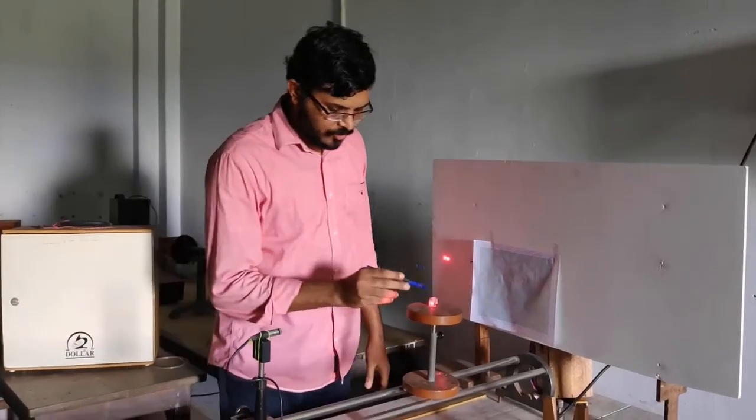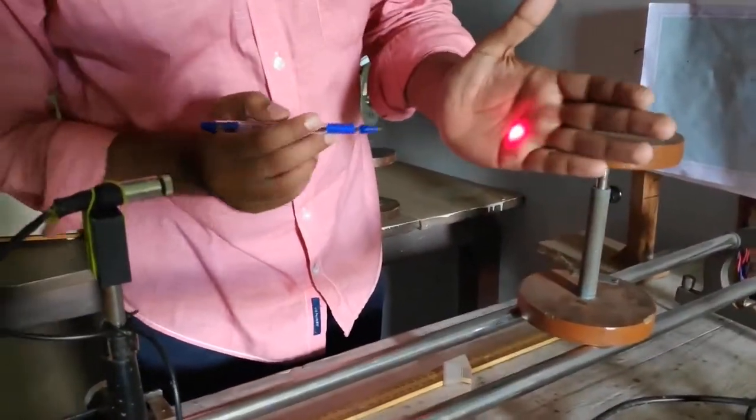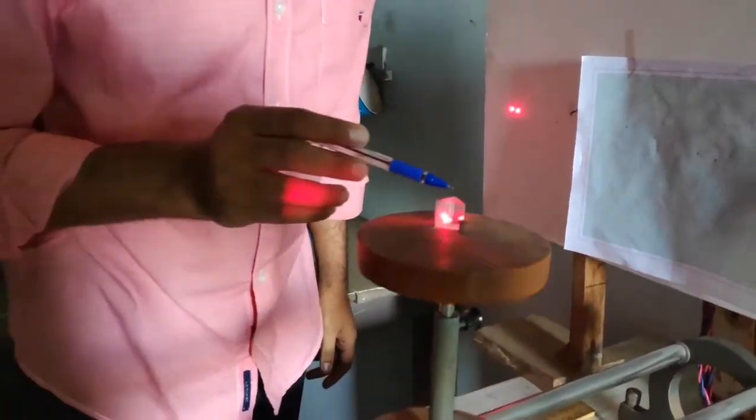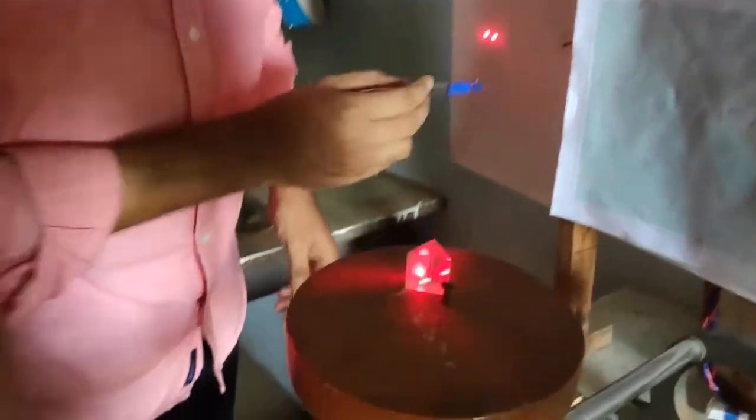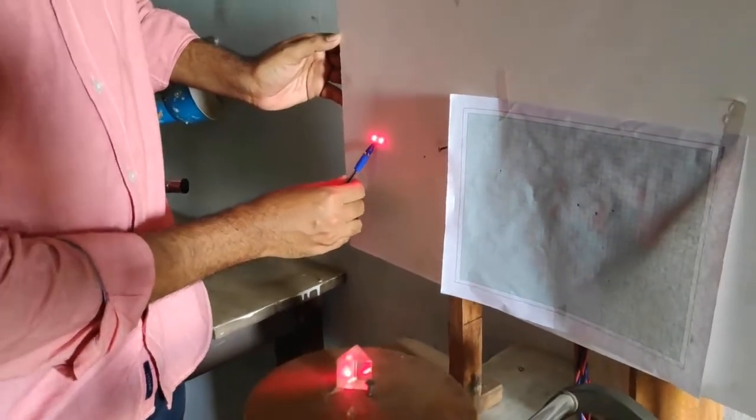Here you have a laser beam incident on the quartz prism. Now before the quartz prism you have a single beam of light, and after the quartz prism, after refraction, the image is formed on the screen and you can see there are two rays.